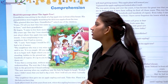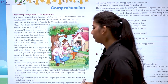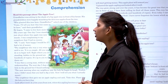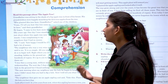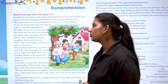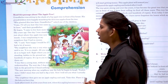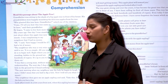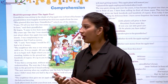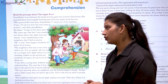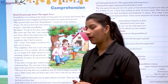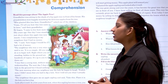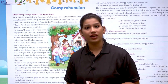Here the passage is about the apple tree. Grandchildren were sitting in the shade of a big tree in front of his house. The grandchildren were happily munching the delicious apples from the tree. 'Who planted this tree?' Grandfather asked one of the children. 'Come, I will tell you how this tree came to be here,' said the grandfather.